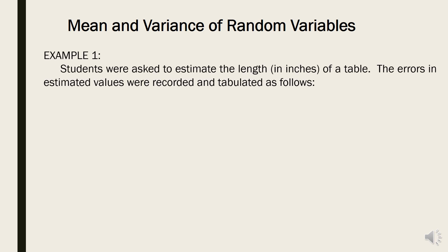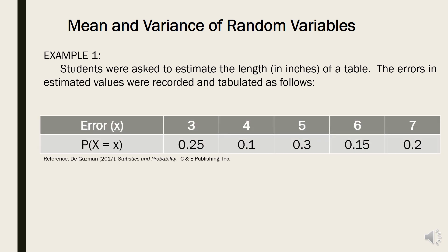Example number one: Students were asked to estimate the length in inches of a table. The errors in their estimated values were recorded and tabulated. This problem is taken from the book of Guzman, Statistics and Probability. The random variable here is the error, and there is a corresponding probability for every value.